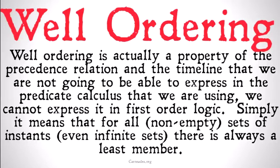What well-ordering says is that for all sets of instants — all subsets of our set of instants — even infinite sets, there will always be a least member of any of those sets. So if I have a timeline with a set of instants on it, and I take any subset of that set of instants, any group of intervals of time, there will always be a smallest instant, a first instant, a least member of the set.